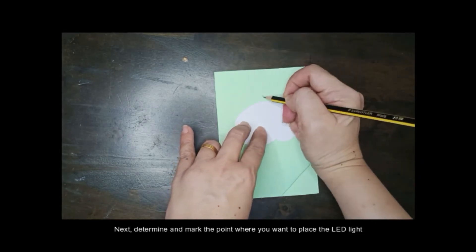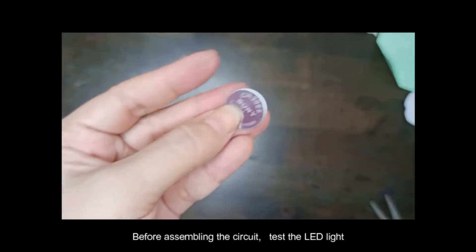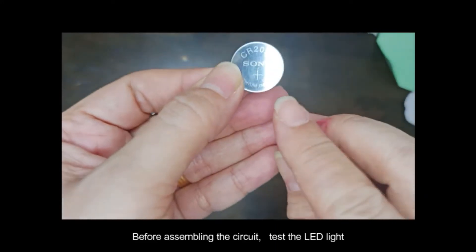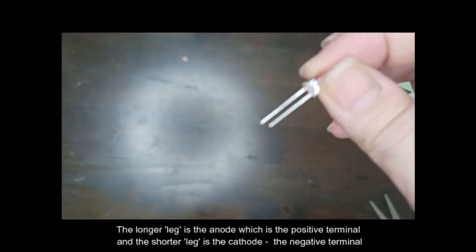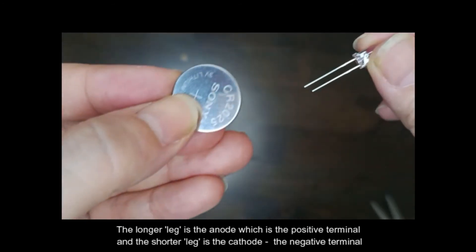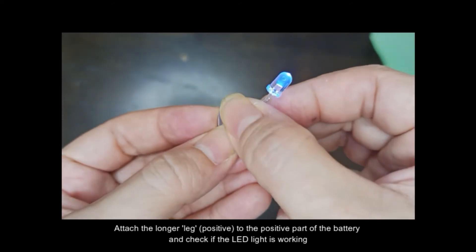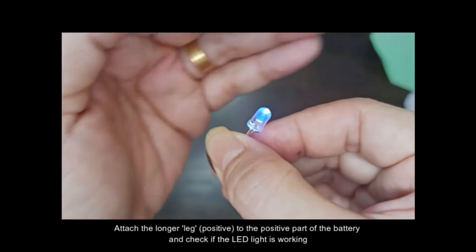Next, determine and mark the point where you want to place the LED light. Before assembling the circuit, test the LED light. The longer leg is the anode which is the positive terminal and the shorter leg is the cathode. Attach the longer leg to the positive part of the battery and check if the LED light is working.